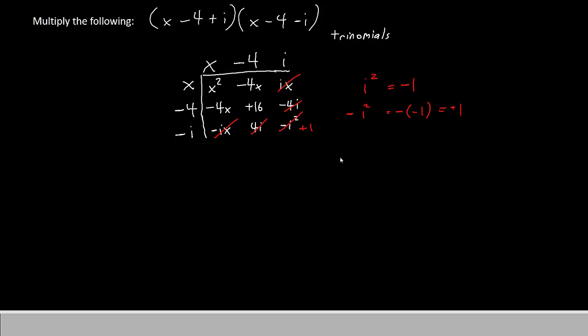You may now see that some of these terms that are remaining will combine together. For example, the negative 4x and the negative 4x are both x terms, so you can combine them into one term. For the same reason, the plus 16 and the plus 1 will also combine.